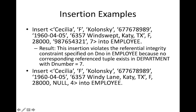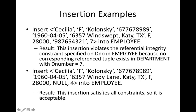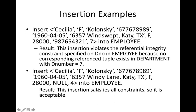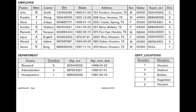In another case, 'Cecilia' is inserted with a new SSN value and department number 4. Department number 4 exists in the department table, so everything is correct. This insertion satisfies all constraints and is acceptable. So before insertion, the system checks whether any of those three constraints — key, entity integrity, or referential integrity — would be violated.